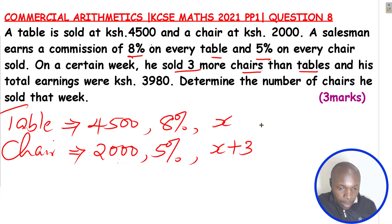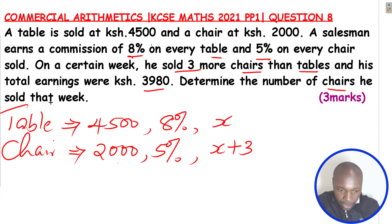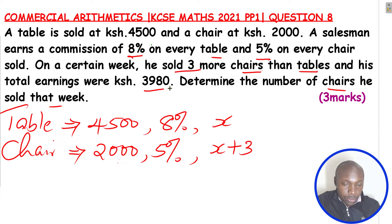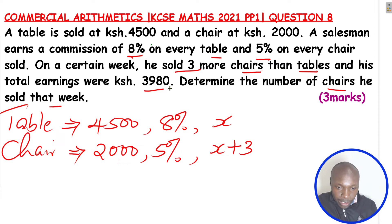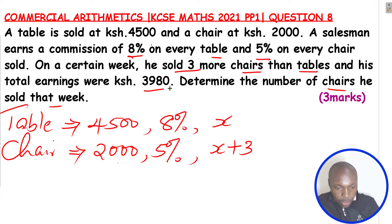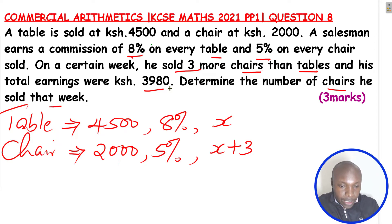His total earnings were 3,980 shillings. We need to determine the number of chairs he sold that week. The amount 3,980 represents the total commission that this person got. So we need to find the amount of money he was able to get after selling all the tables and all the chairs.